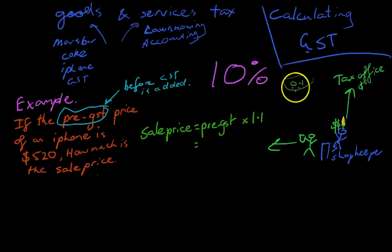That means we're multiplying it by 0.1. If you want to know how much the total price is going to be, you need to know 110%. And 110% as a decimal is 1.1.